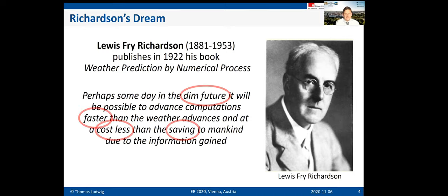There are several important aspects in this citation. First, 'the dim future' — obviously that is us now. He speaks about the speed of computation being faster than the weather advances, because of course he wants to make a prediction. Interestingly, at that time he already spoke about costs and potential savings — for example, if you can predict an extreme weather situation you might trigger an evacuation and save human lives.